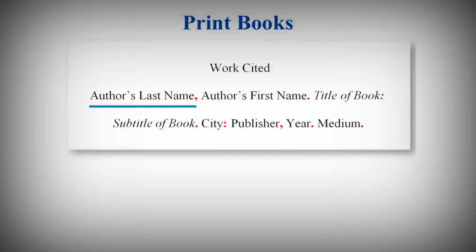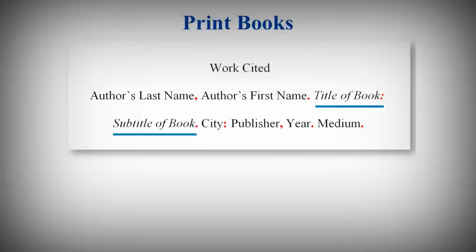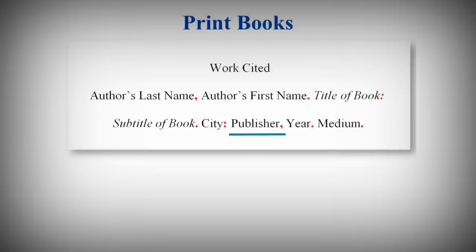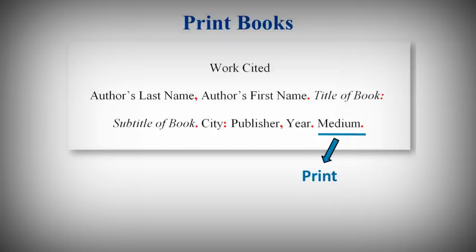Start with the author's last name followed by their first name. Next, enter the title of the book in italics. Then, enter the city of publication followed by a colon — there's no need to include the state or province. Then, the publisher's name followed by a comma, and the year of publication followed by a period. Finally, indicate the medium of publication. Medium refers to the format; for print books, the medium would be Print.